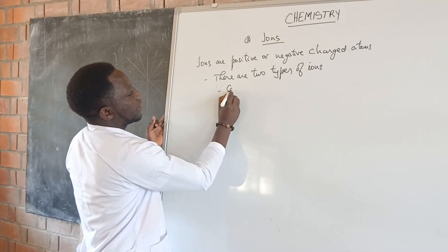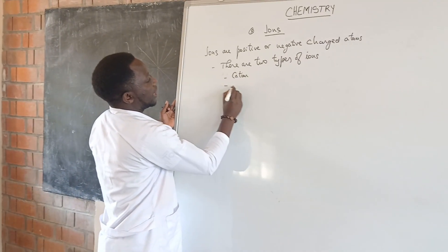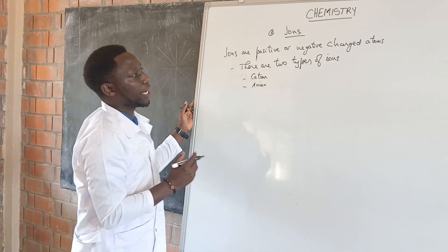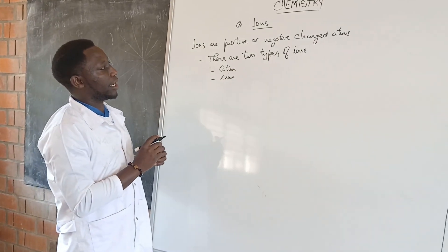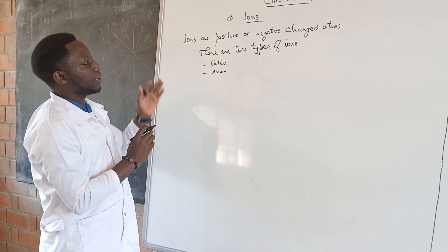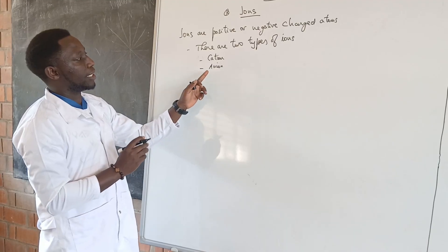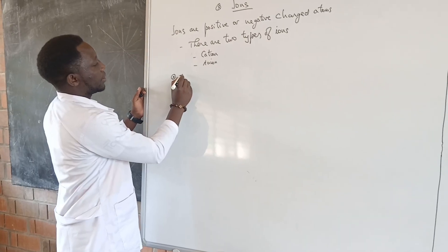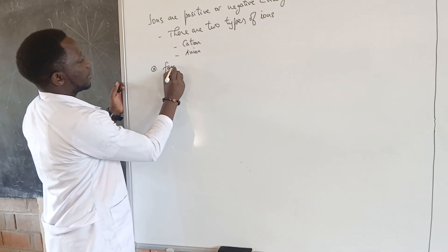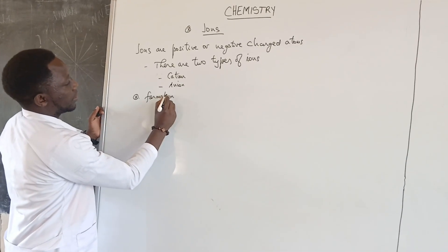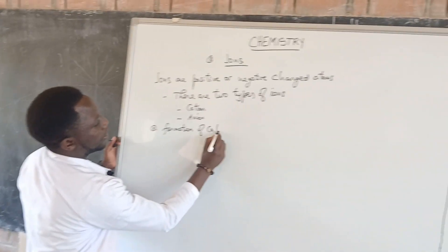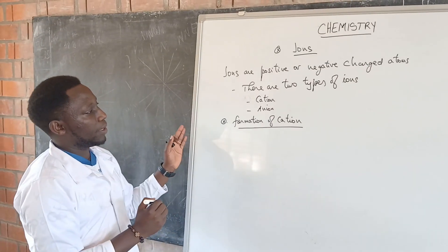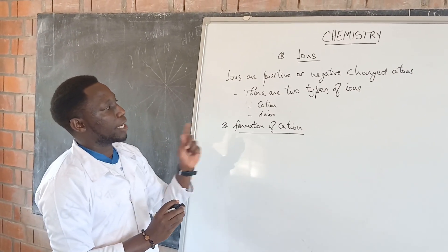One is cation, another is the anion. These are the two types of ions. Our topic today is really to talk about the formation of cation and the anion. Let's start with cation. Formation of cation. Cation is one type of ion.